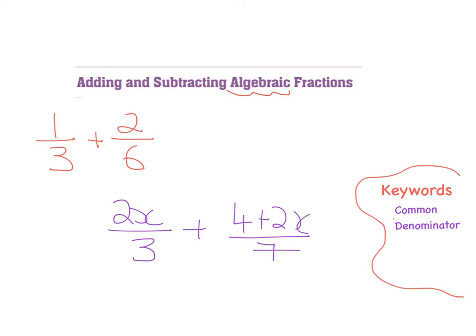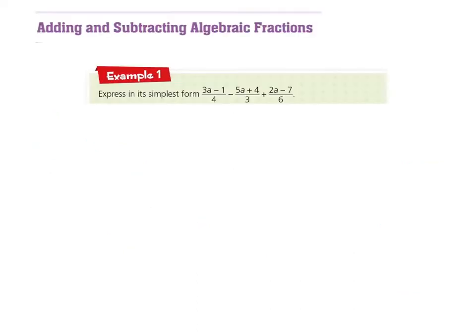Okay, so the first example we have here is express in its simplest form or simplify the following: 3a minus 1, and that line there means divided by 4, minus 5a plus 4 divided by 3 plus 2a minus 7 divided by 6. And what each one of these is, is they are each fractions, and with the fractions we can see unknowns or variables. And so we call these algebraic fractions.